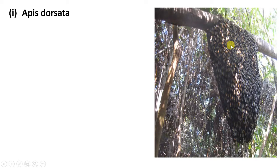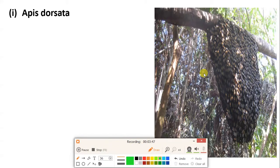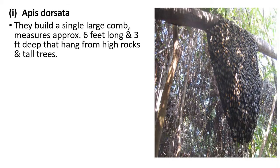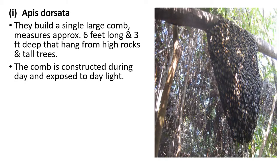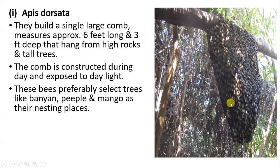The hive of Apis dorsata is about six feet in length and three feet in depth — a very large single comb. Apis dorsata is always found in rocky, high mountainous regions and on tall trees. They usually construct the hive during the daytime, meaning the hive is exposed to daylight. They more preferably select trees like banyan, peepal, and mango as nesting places.